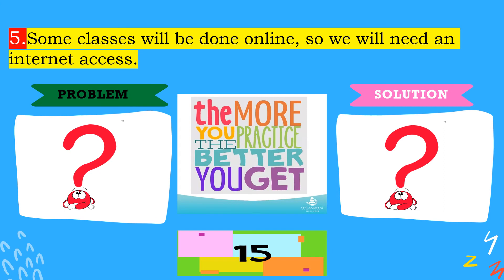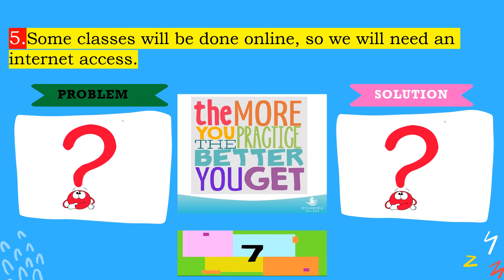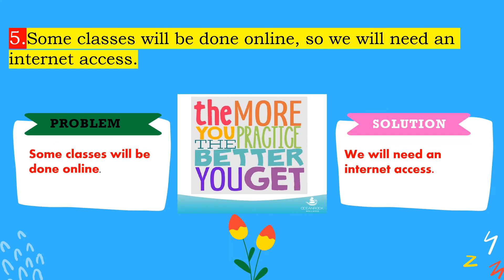Number five: 'Some classes will be done online, so we will need internet access.' The correct answers are: for the problem, 'some classes will be done online,' and for the solution, 'we will need internet access.'